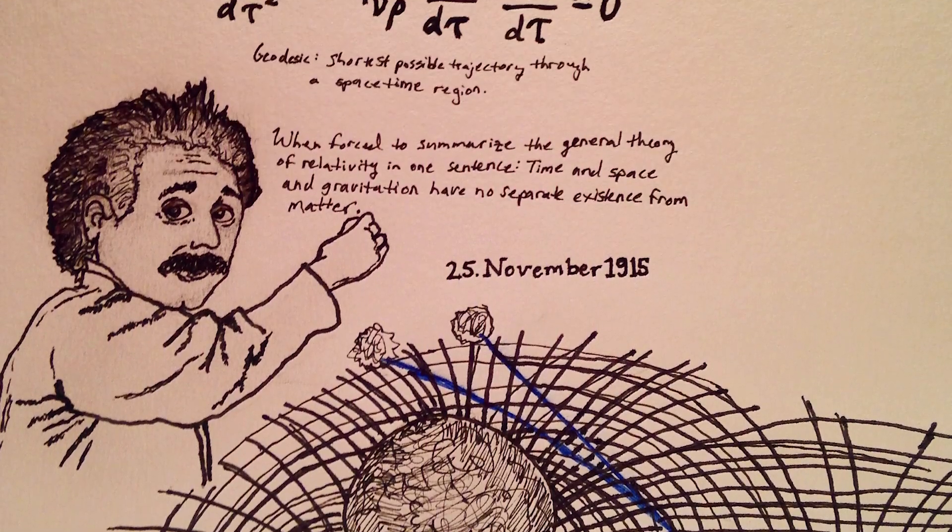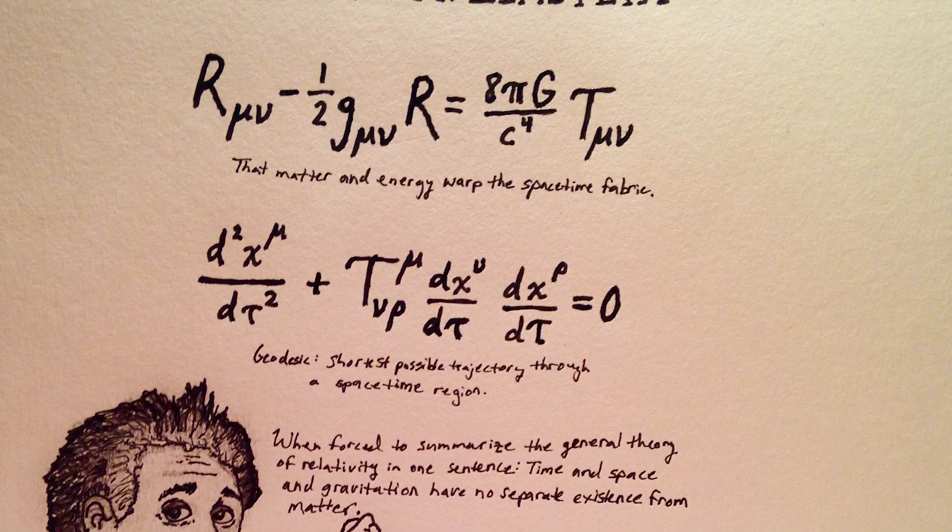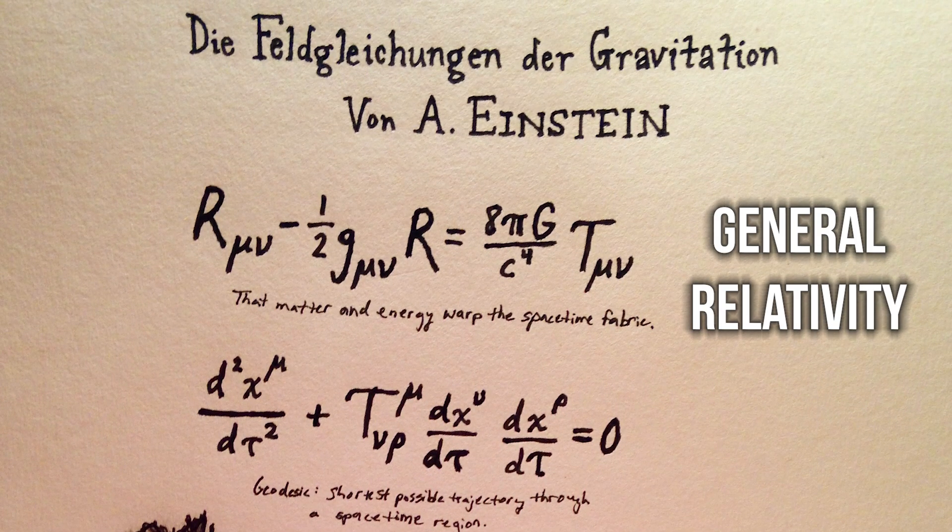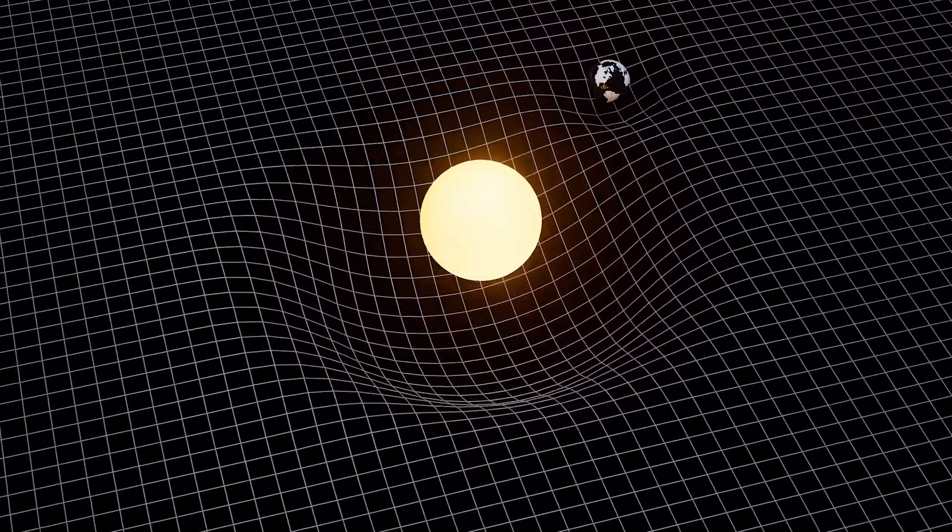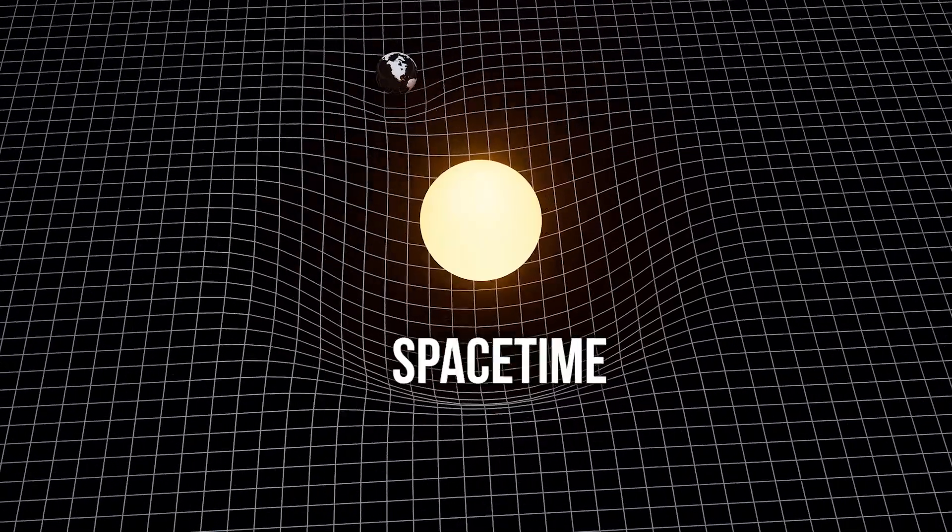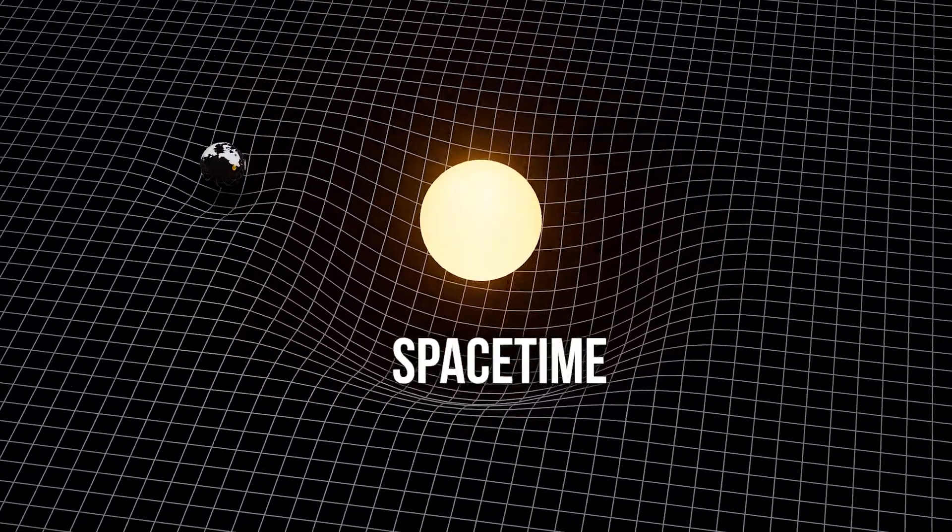In 1915, Albert Einstein proposed a theory of gravity known as general relativity. According to this theory, objects with mass create a warping effect of the fabric of space and time, which is unified as space-time, giving rise to gravity.